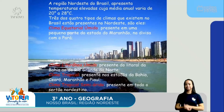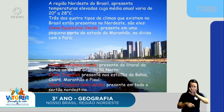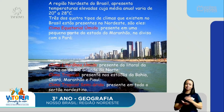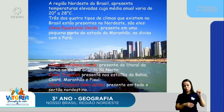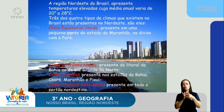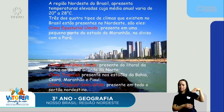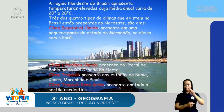A região Nordeste do Brasil apresenta temperaturas elevadas — quem não gosta da temperatura do nosso Nordeste para pegar uma praia? Tem temperaturas com média anual que varia de 20 a 28 graus. Três dos quatro tipos de climas que existem no Brasil estão presentes no Nordeste: o clima equatorial úmido, presente em pequena parte do Maranhão na divisa do Pará; o clima litorâneo úmido, presente do litoral da Bahia ao Rio Grande do Norte; o clima tropical, presente nos estados da Bahia, Ceará, Maranhão e Piauí; e o clima tropical semiárido, presente em todo o sertão nordestino.